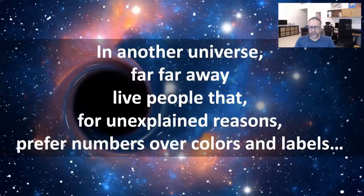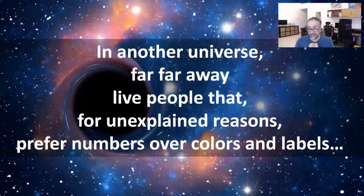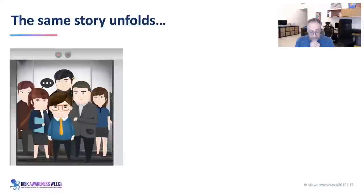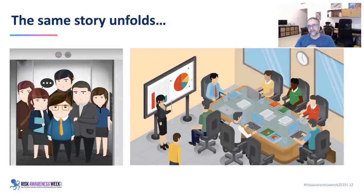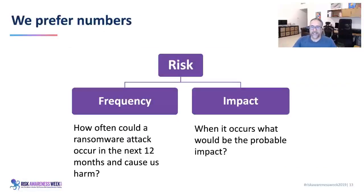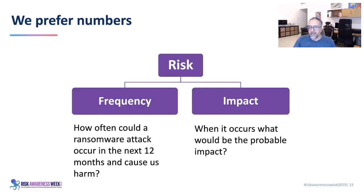In another universe, far far away, live people who for unexplained reasons prefer numbers over colors and labels. Same scenario happens — elevator, crisis room — but they don't get out the heat map. Instead they have a simple model: risk is a function of frequency and impact. Pretty much the same as the heat map, but with their own predefined buckets. Frequency is the likelihood — how often could a ransomware attack occur in the next 12 months and cause harm. Impact is: if this happens, what is the probable impact?